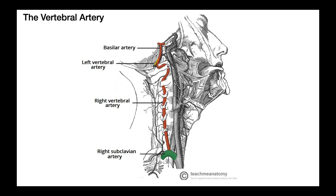Then it goes through the transverse foramen of C1 and immediately moves posteriorly — and in a neutral neck position, actually posteriorly and a tad inferiorly. It courses posteriorly along the length of the atlas. Then when it gets to about the halfway point of the atlas, it curves back up superiorly. So from C2 to C1 it goes anteriorly and superiorly, curves back a little bit inferiorly, and then at about the halfway point of the atlas curves back up and fuses with the contralateral vertebral artery.